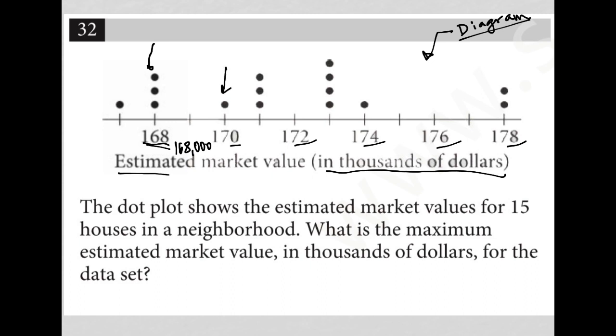There's one valued at 170,000, three valued at, this is most likely 171,000, so on and so forth. So the number of dots tells you the number of data points that correspond to that market value.